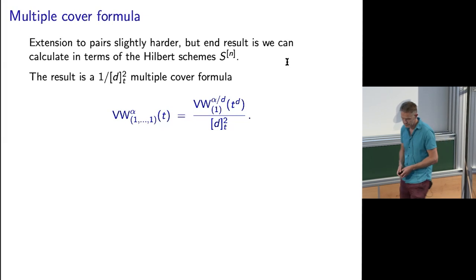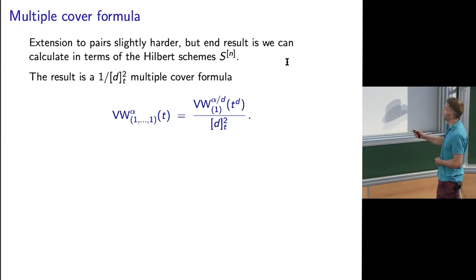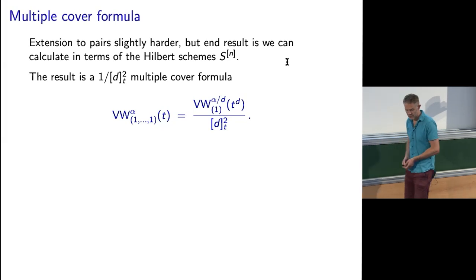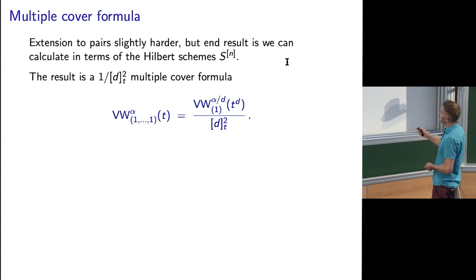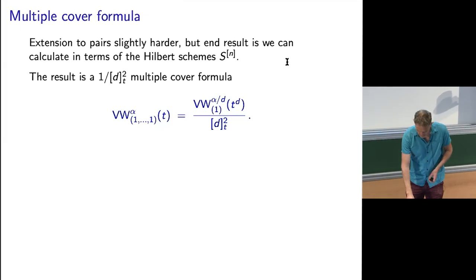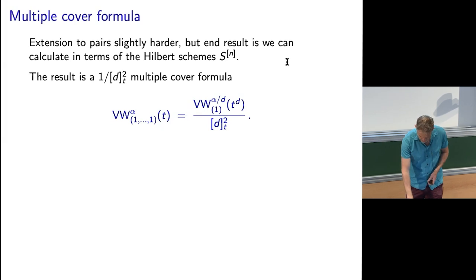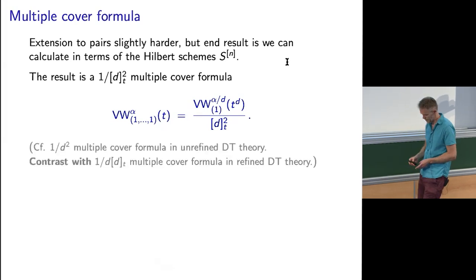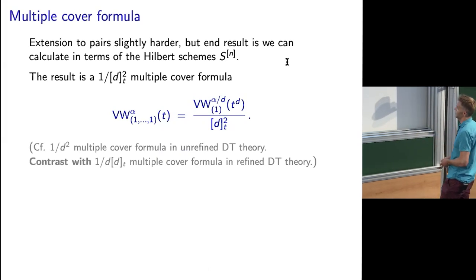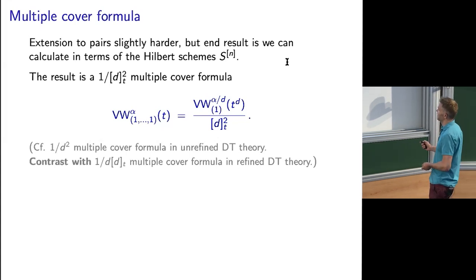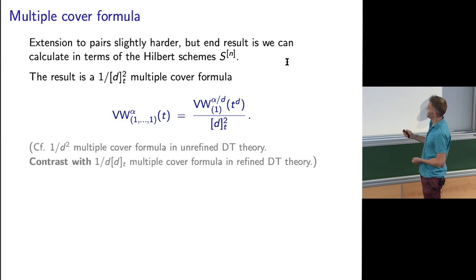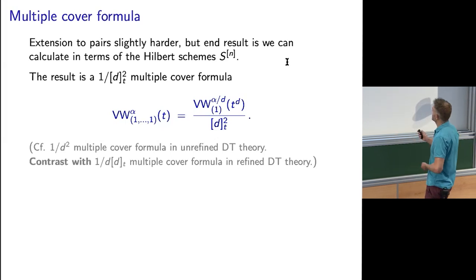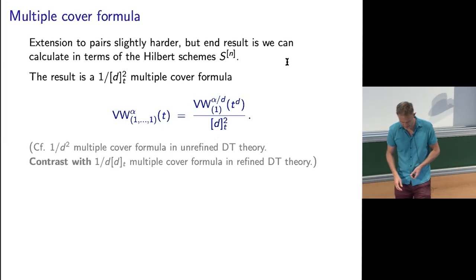This means you can compute a multiple cover formula for these refined invariants. These uniformly thickened Vafa-Witten invariants equal the usual invariants counting rank one sheaves on the surface — governed by Hilbert scheme calculations on S — divided by a quantum integer squared: the 1/d² multiple cover formula becomes 1/[d]². Compare with the usual 1/d² multiple cover formula; contrast with the refined one from Meinhart and Davison, which gives d times the quantum integer d. For some reason we get quantum integer squared, and I don't actually know the reason for that.